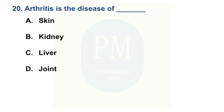Arthritis is the disease of. Option A: Skin. Option B: Kidney. Option C: Liver. Option D: Joint. The correct option is Option D — Joint.